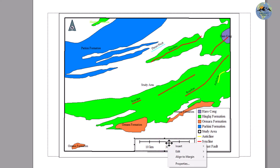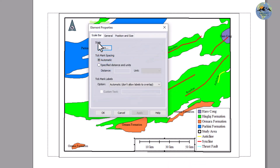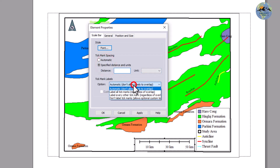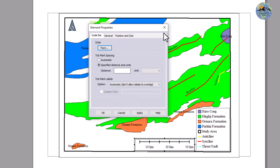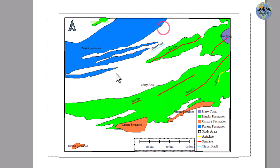Go to Properties for the scale bar and you can change the font as well as the style — distance units, label all text marks, do not label text marks, and all these settings. Apply these settings to the scale and click OK.